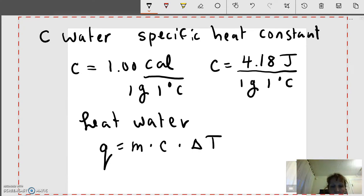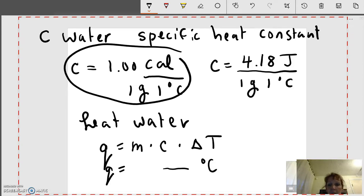Sometimes they tell you that water is being heated up a certain number of degrees Celsius. You need to pick your C value. If you want Q to be in calories, or if they give you Q in calories, you have to use this C value. If they tell you that Q is in joules, you need to use this value for C.